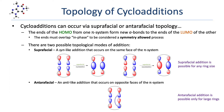While suprafacial addition is possible for the formation of any ring size, antarafacial addition is restricted to the formation of relatively large rings, typically eight atoms or larger. For an antarafacial addition, the ring needs to be large to enable the flexibility needed to wrap one pi system onto the opposite faces of the other pi system.